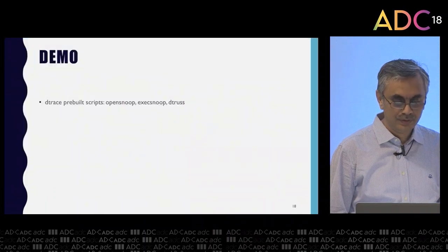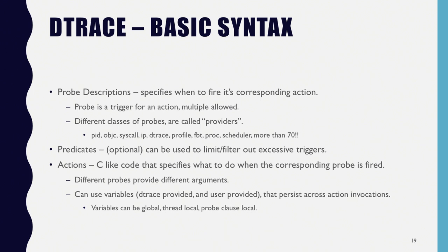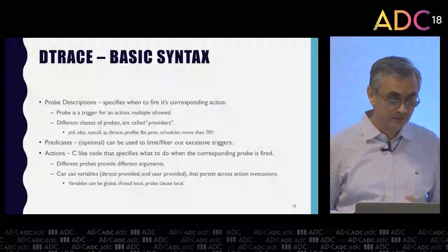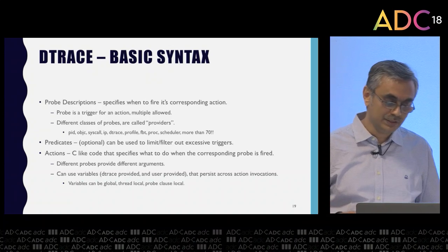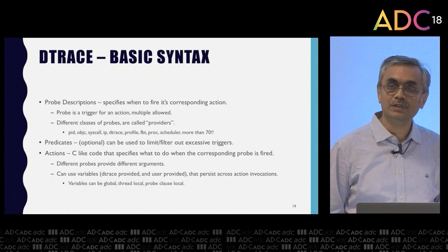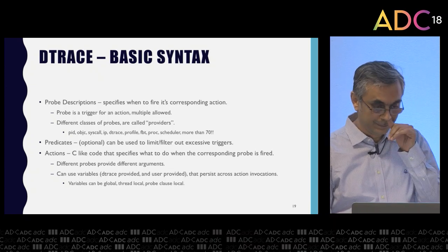Now, what if you want to write your own scripts? Every dtrace script is made up of three parts: probe descriptors, predicates, and actions. A probe description specifies when to fire its corresponding action — a probe is a trigger for an action. You can have multiple probes in a script. There are different classes of probes called providers — PID, Objective-C, System Call, IP for networking, and others. There are more than 70 types of probes available. We are only going to discuss PID probes.